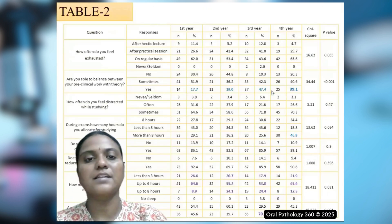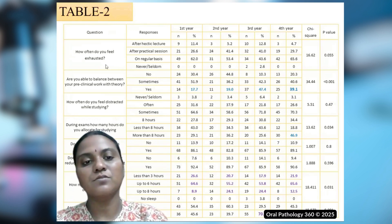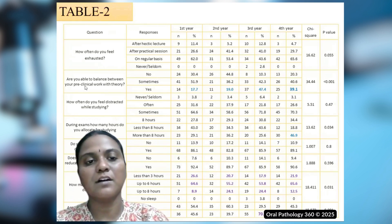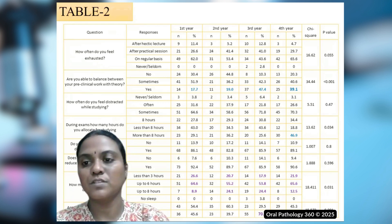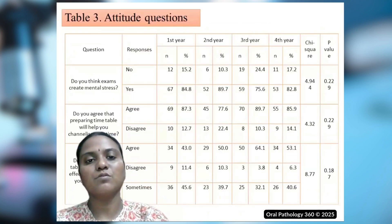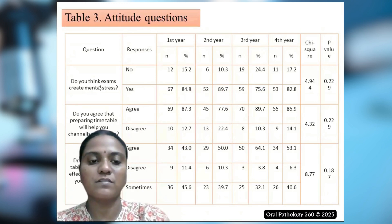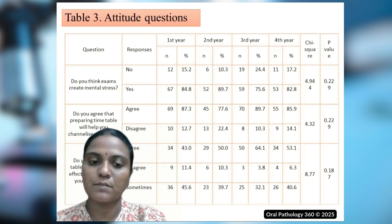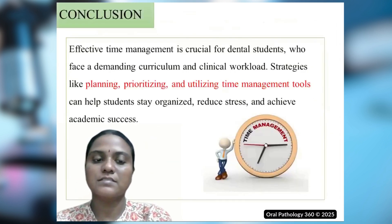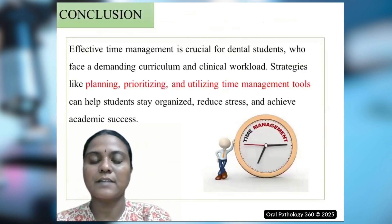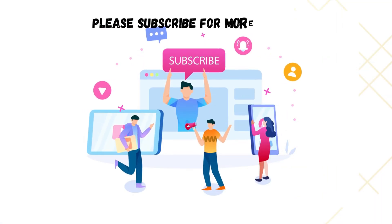The results show tables of time management — travel time, study time, leisure time, and time for socializing. Final year students showed significantly less travel time than other years. Another table shows responses to questions about how often they feel exhausted, how they balance pre-clinical work and theory, how many hours they sleep during exams, and how they cope with exam stress. A third table covers attitude questions on preparing timetables and how timetables play an important role in managing studies. The conclusion is that strategies like planning, prioritizing, and utilizing time management tools are important.